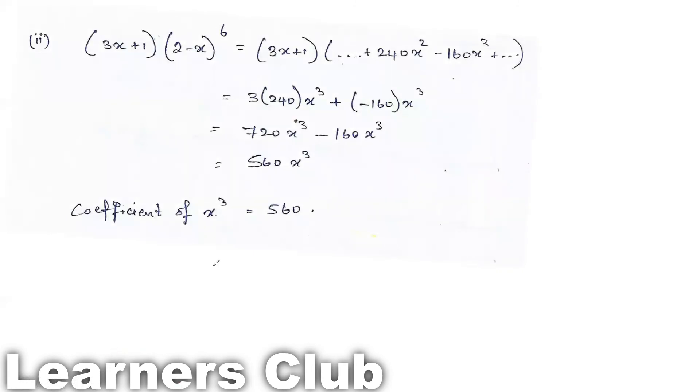Now if I want to find the x cubed, as you can see there is already one x here. So you have to find the x squared term from this. And there is one that is x to the power 0, so you need to find the x cubed term from this. So as you already know that the coefficient of x squared is 240, coefficient of x cubed is minus 160, you do not have to expand it again.